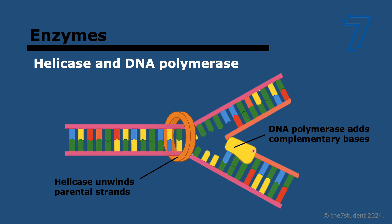Then DNA polymerase is what actually carries out replication — it assembles the new strands of DNA. It uses the original ones as a template, and then it adds one nucleotide at a time. Once the hydrogen bond forms between that nucleotide and the original one in the template strand, it links it to the previous nucleotide via a covalent bond. So remember the functions of these two enzymes.